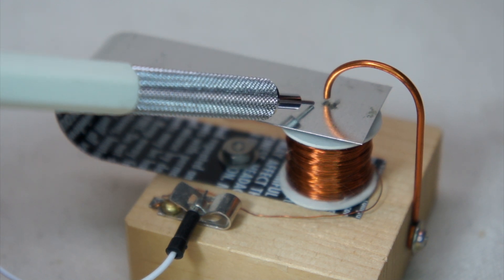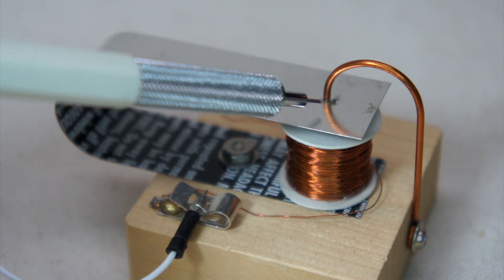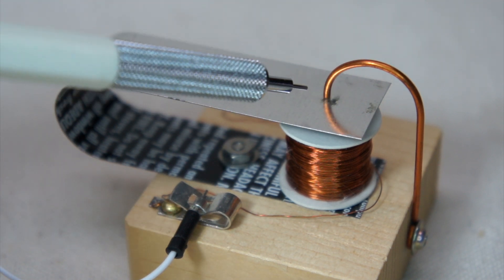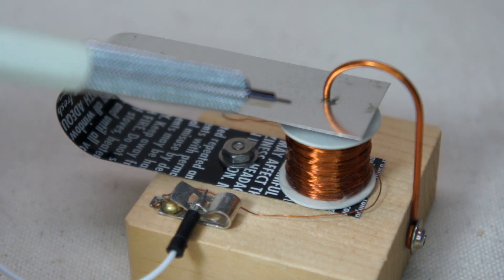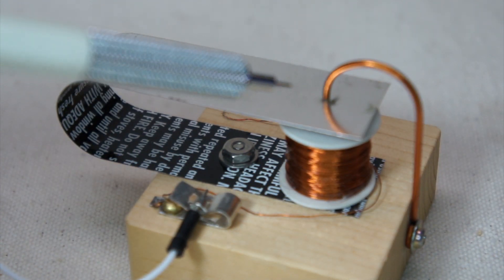When the magnet is de-energized, the armature springs up, hits this stop, and makes a slightly different sound, which telegraph operators used to refer to as a clack.